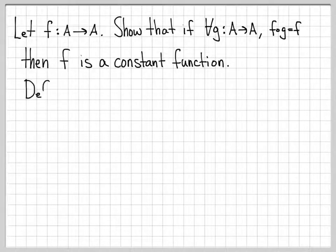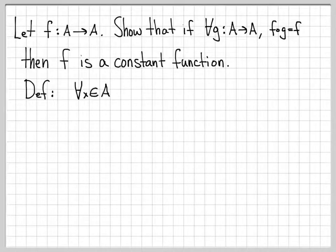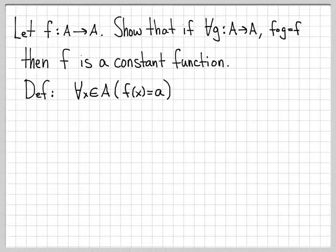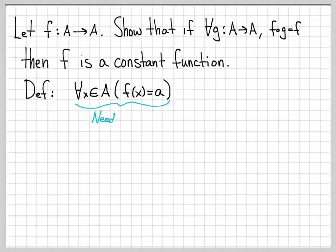One of the first things we need to know is what a constant function is. A constant function on A is one such that for all x in A, f of x is equal to some number — we'll call it a. So no matter where you evaluate this function in its domain, you always get the same value out, and that value is what we're calling a.